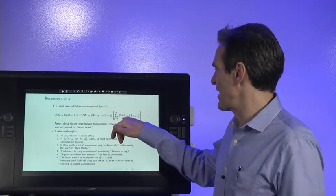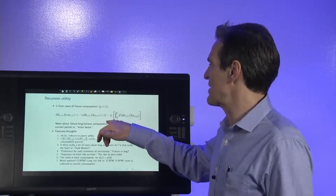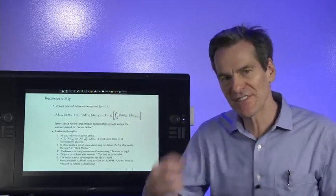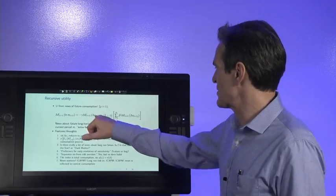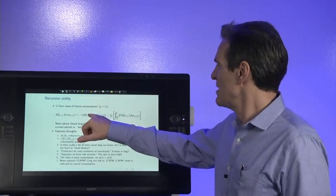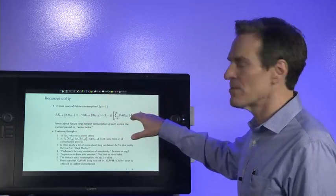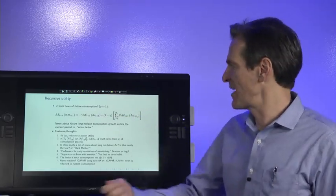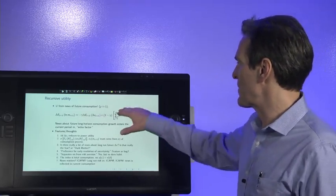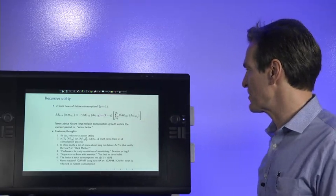So in this one, this is a nice statement of the economics. It says, what are people scared about? They're scared that asset returns fall when consumption growth falls, but they're also scared that asset returns fall when they get news about long-run future consumption that isn't reflected in today's consumption. So that becomes the extra factor that people are scared about.